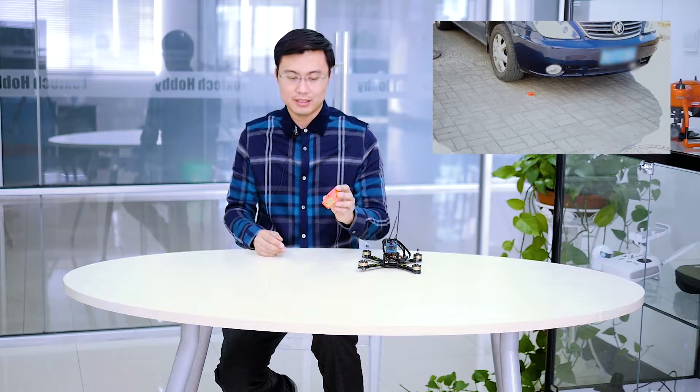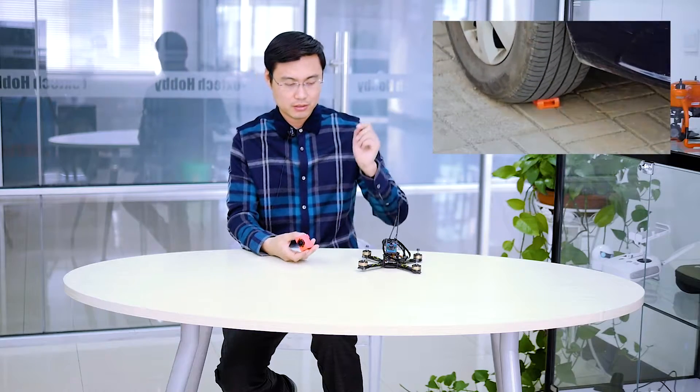So it can protect your camera in a crash. After the crash, you will always have an intact camera like this. So I'm going to show you how to mount this one on the racing quadcopter.